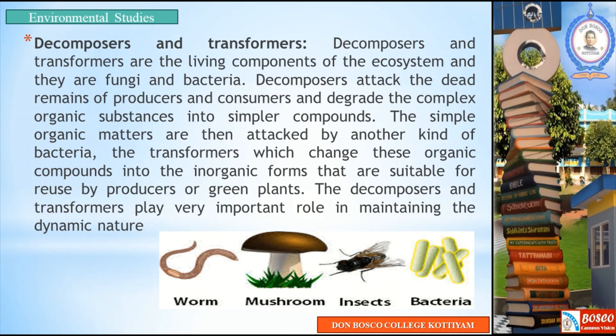The third division of biotic components are decomposers and transformers. These are living components of the ecosystem — fungi and bacteria. Decomposers attack the dead remains of producers and consumers and degrade complex organic substances into simpler components. The simple organic matter is then attacked by transformers, which change organic compounds into inorganic form suitable for reuse by producers or green plants.